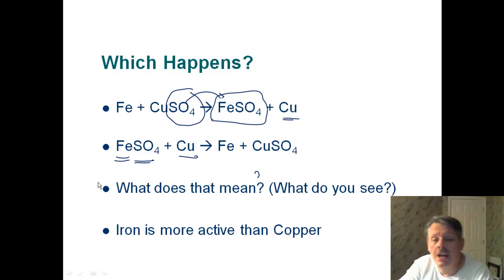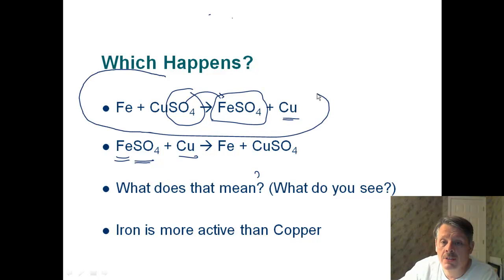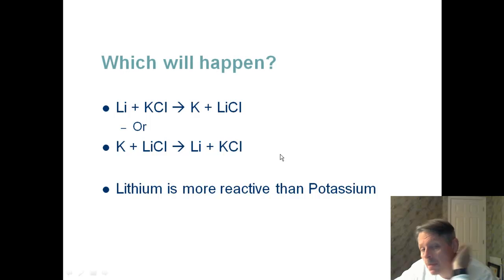And in our case, that simply means they're higher on the activity series, right? So since iron is more active than copper, then sulfate is going to be with iron, and this happens. So does this happen? No, it definitely does not. So nothing happens right there. That does not happen.